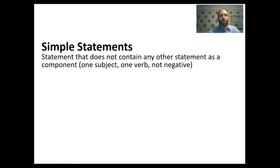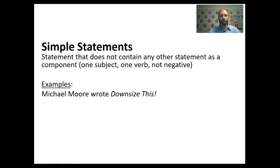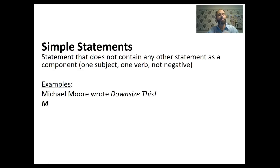The basic unit that we're going to be working with are simple statements. A simple statement is a statement that does not contain any other statement as a component. It has one subject, one verb, and it's not negative. So let's take a look at some examples. 'Michael Moore wrote Downsize This.' That's a simple statement — a subject and a verb, and it's not negative. What we're going to be doing in this chapter is picking a letter to stand in for it. We can pick whatever letter we want. An easy way to keep track is to choose the first letter of the subject or verb or object. In this case, M — so M stands in for 'Michael Moore wrote Downsize This.'